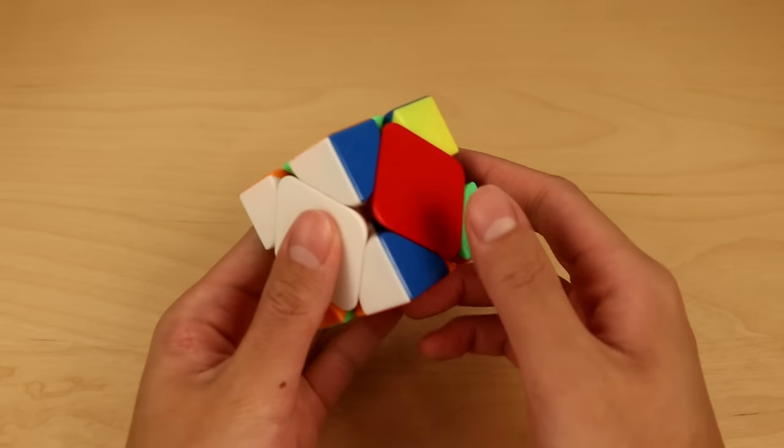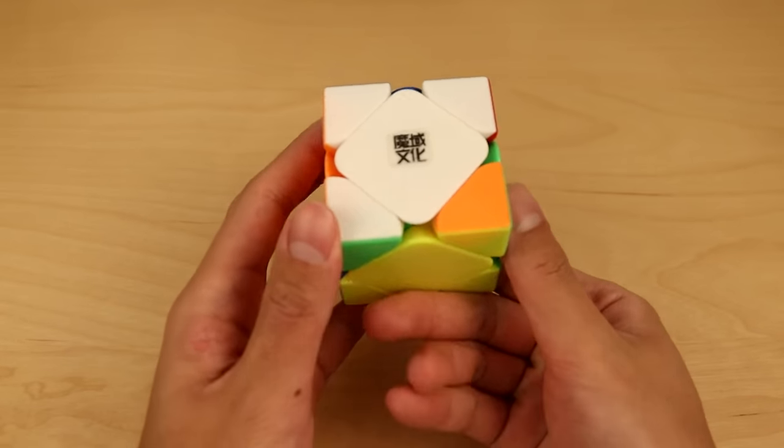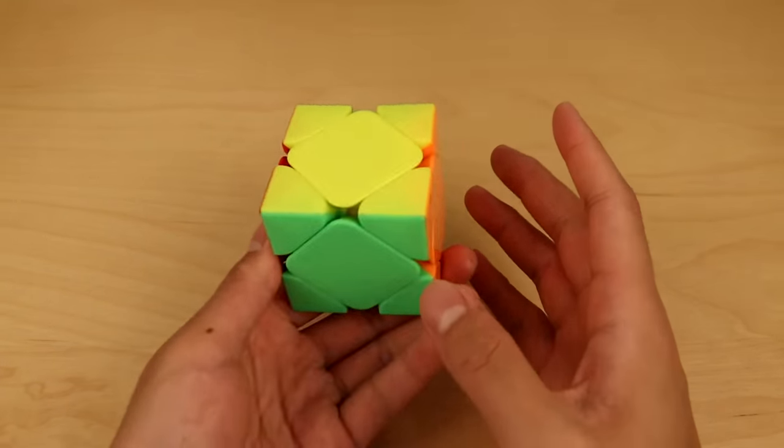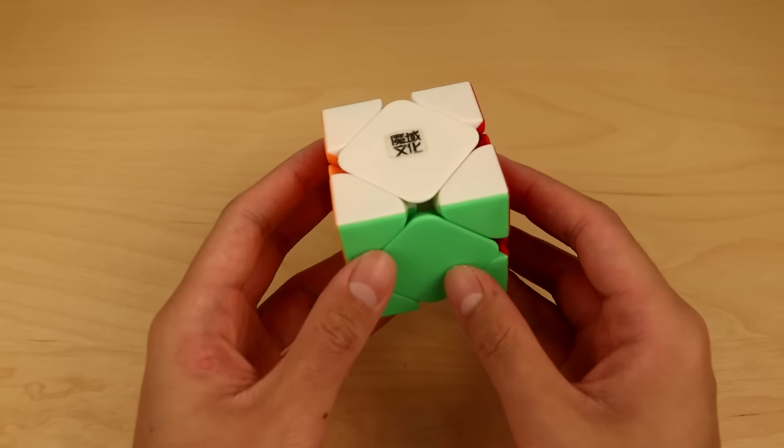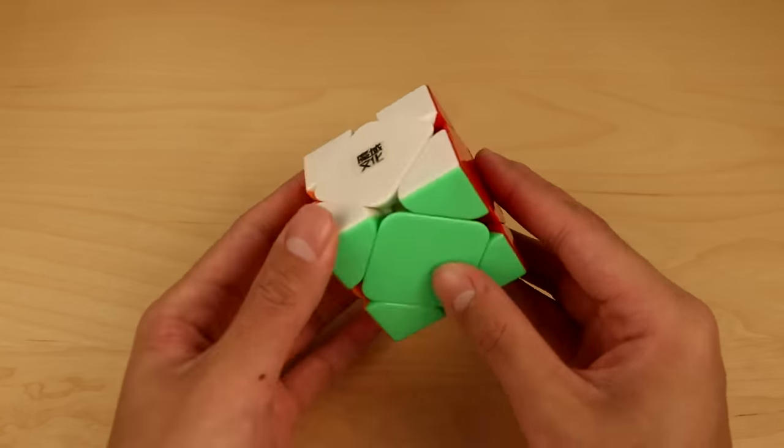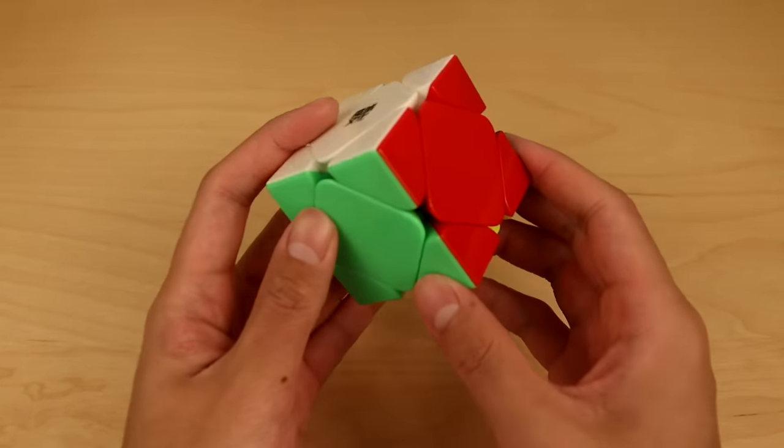Now we can solve the rest of the cube into that pseudo layer state. In this case it's very simple, just a sledgehammer. And then just undo the last move to fix the layer, and we solve the cube. Again this is a very advanced technique that would be hard to do, but you can see how you can get some pretty nice solutions by making pseudo layers, solving into them, and doing that one last move at the end.